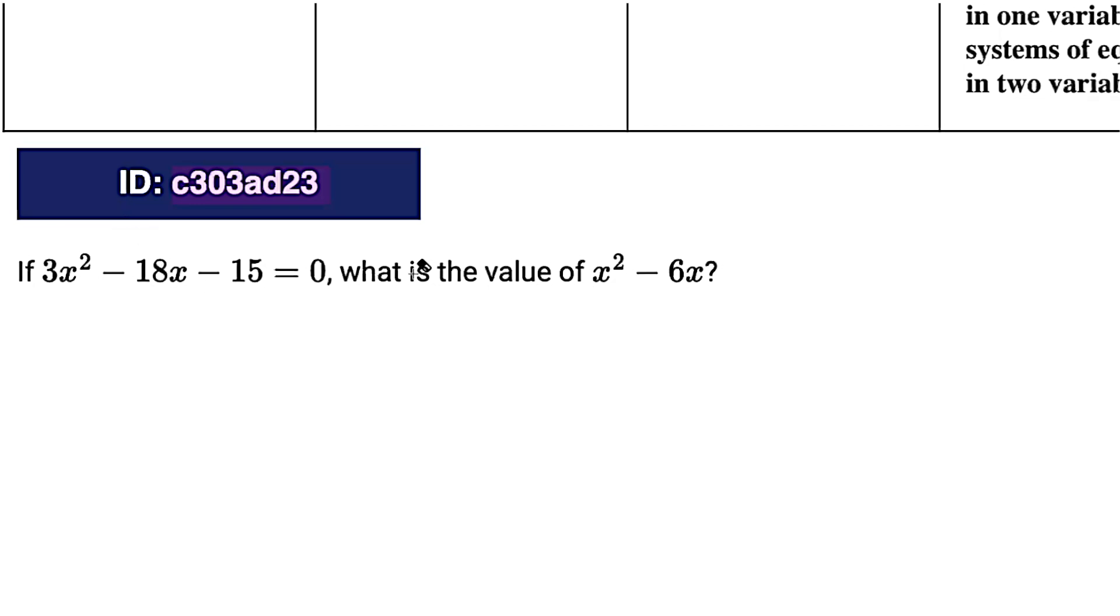My recommendation is that you try to find common ground. That is, try to get that first equation to look more like the second equation, or in this case, the second expression, right? What do I notice? Well, we're going from 18x, negative 18x, to negative 6x. What's the relationship there? Let's think about it. What's 6 times 3? 18.